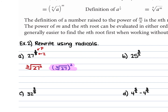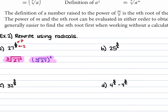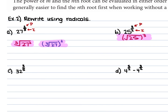I prefer writing it with the base in parentheses raised to the second power, because it's easier to find the cube root of 27 first and then square that number, rather than multiplying 27 by itself and then finding the cube root of a much larger number. Either form is acceptable. For example b: 25 to the power of three-halves. The 3 is the power and the 2 is your index, so this is the square root of 25 raised to the third power. For example c: 32 to the power of three-fifths. The 3 is your power and the 5 is your index, so we're taking the fifth root of 32 raised to the third power.